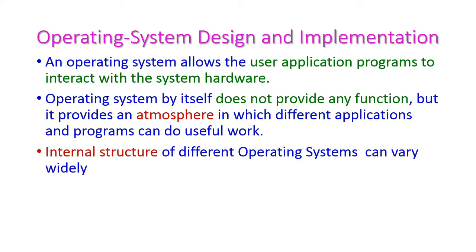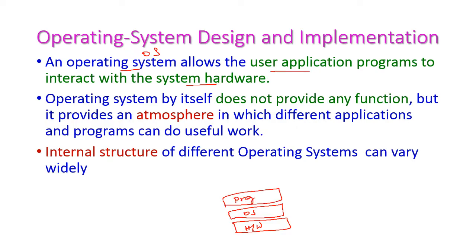The operating system allows user programs to interact with the system hardware. The hardware sits at the base, the operating system on top of it, and all programs are executed on top of the operating system. The OS provides a good environment to execute all user programs so they can easily access the hardware. The OS itself provides no direct functionalities but an atmosphere for programs to run. All operating systems have their own internal structure and they are not all the same.